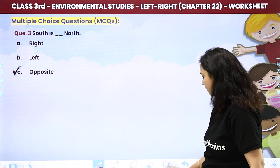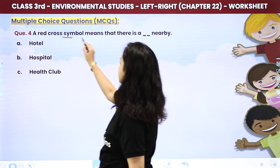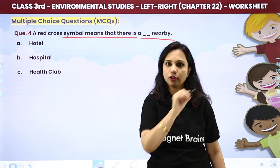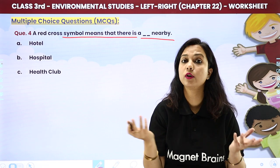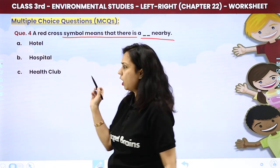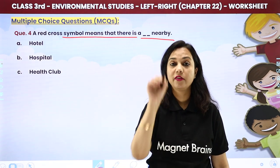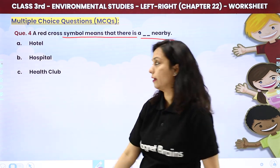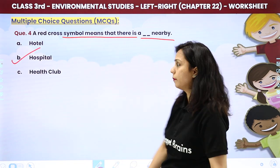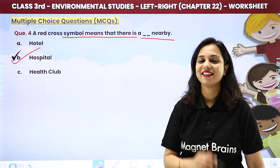A red cross symbol means that there is a dash nearby — is it a hotel, hospital, or health club? We studied that the red cross denotes there is a hospital nearby. That is why the correct answer is hospital.